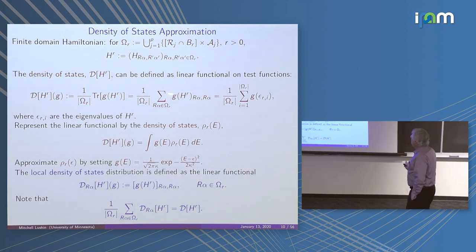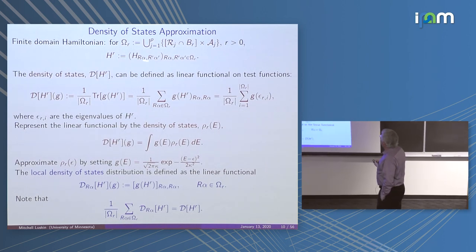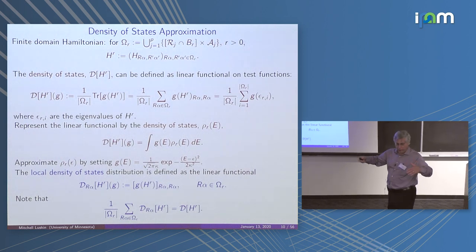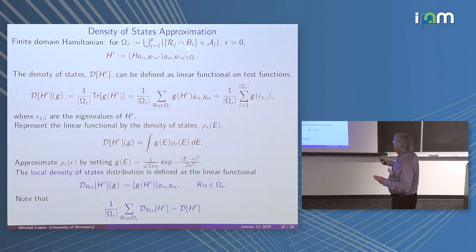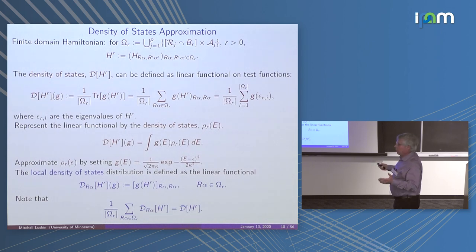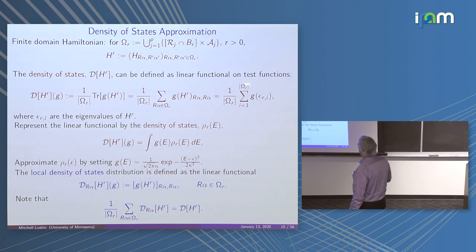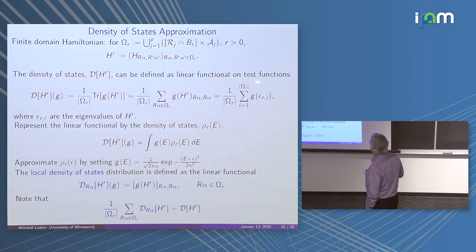The first question is: is the density of states well-defined? That wasn't obvious to us when we first started. We take the lattice and truncate it at some radius r to have a finite domain problem — not periodic, just a large body limit. This is all those degrees of freedom within some distance r from some origin. We have a finite domain Hamiltonian, and in theory this has a well-defined density of states. The question is: as I let r go to infinity, does this converge?